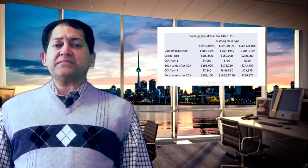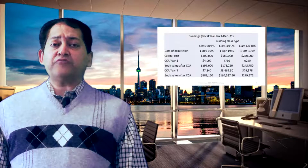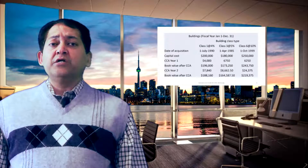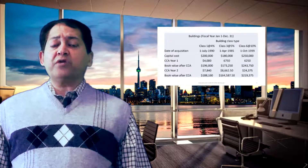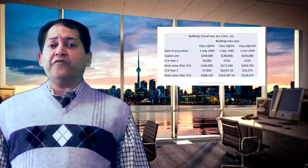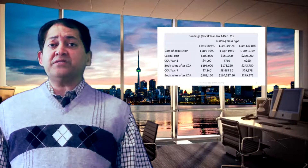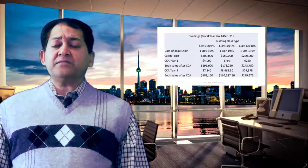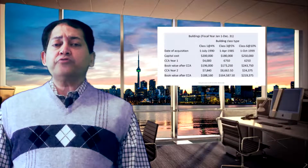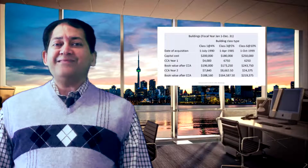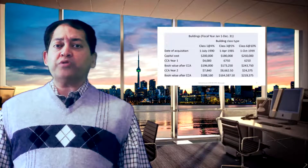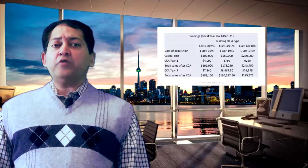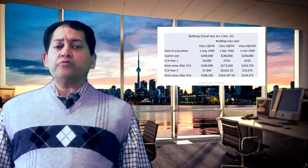For year 1, the capital cost allowance for the class 1 building is $4,000. The rate is 4%, but since this building was acquired on July 1st, we prorate the CCA — charging only half-year depreciation from July 1st to December 31st, the closing date of the fiscal year. For class 3, since the building was acquired April 1st, we charge depreciation for 9 months, and for class 6, acquired October 1st, depreciation is charged for only 3 months.